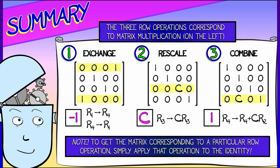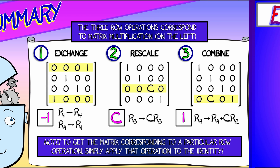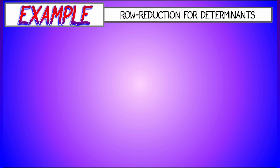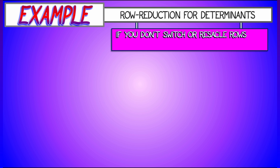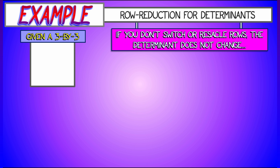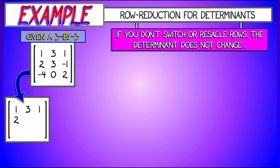All of these row reduction matrices are obtained from the identity by doing the same operation. Now that last row operation that doesn't change anything — you can use that to your advantage if you avoid rescales or exchanges. Take a look at this 3×3 matrix as a simple example. Let's row reduce that down to upper triangular form and see what we get for a determinant.